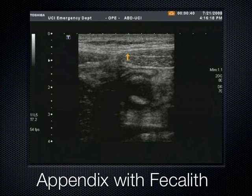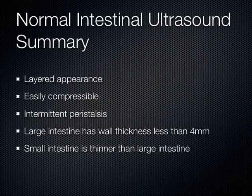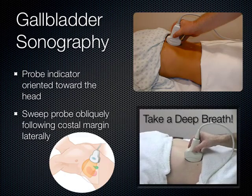With intestines: you want a nice layered appearance, it should be easily compressible, you should see intermittent peristalsis. Large intestine wall is less than 4 millimeters, and small intestine is somewhat thinner.